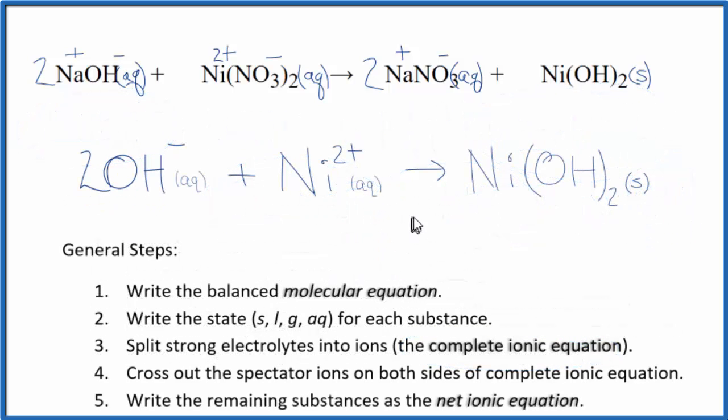So this is the balanced net ionic equation for NaOH plus Ni(NO3)2. You'll note that charge is conserved. We have 2 negative charges here, positive 2. They're going to cancel out to give us a neutral compound. And if you count the atoms up, they're the same on both sides. So mass is conserved as well.